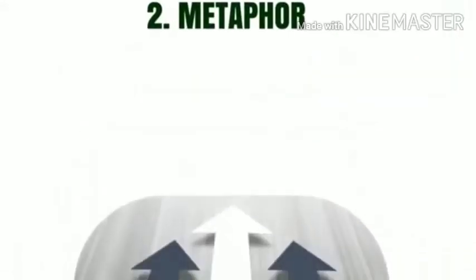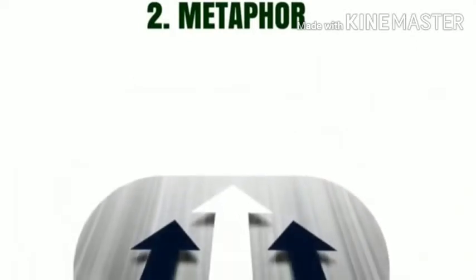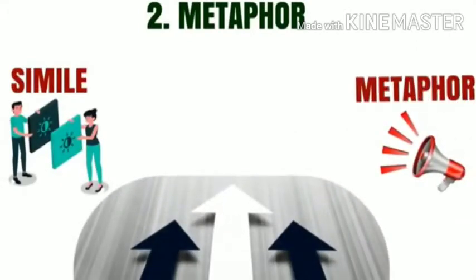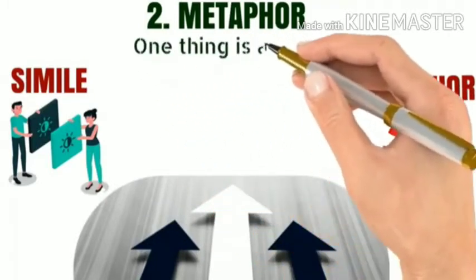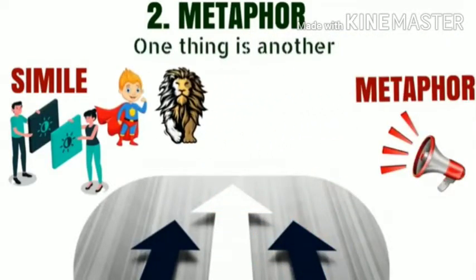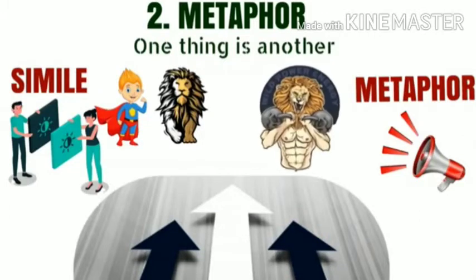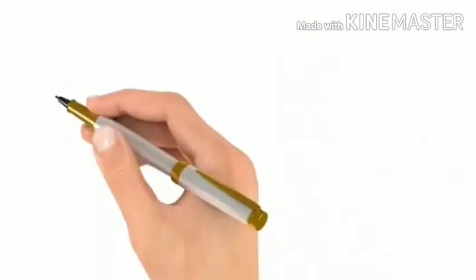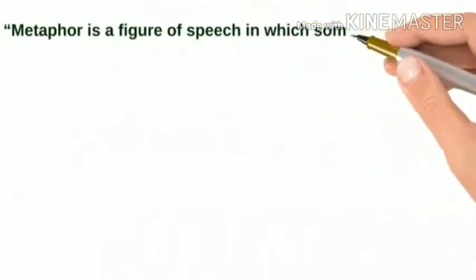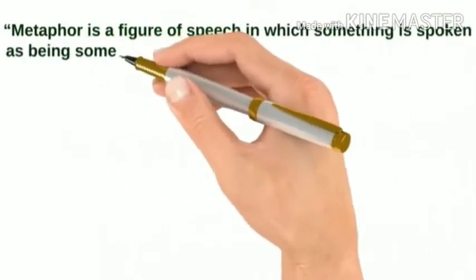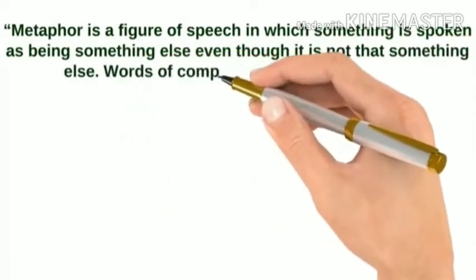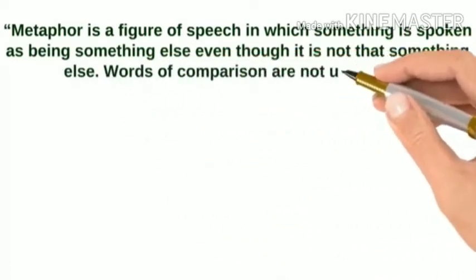Metaphor. It's an advanced form of simile. Because simile makes a comparison, but metaphor makes a declaration. It says that one thing is another. It does not say that he is as brave as a lion — it declares that he is a lion. So, metaphor is a figure of speech in which something is spoken of as being something else, even though it is not. Words of comparison are not used in it.